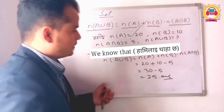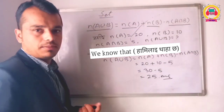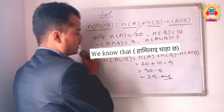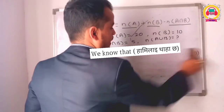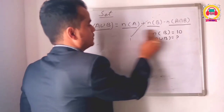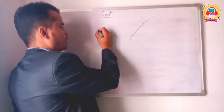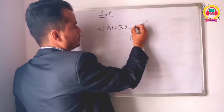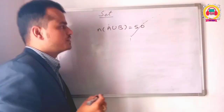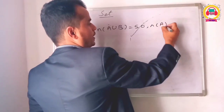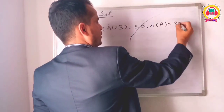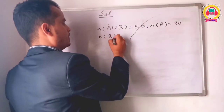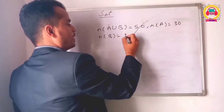This is all the process. We are going to practice this. Number of A union B is equal to 50. Number of A is equal to 30. And number of B is equal to 10.